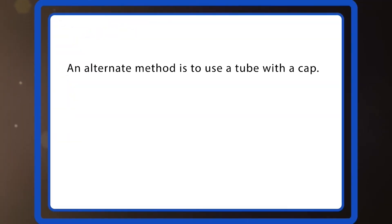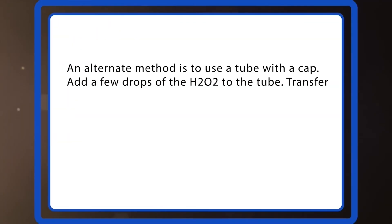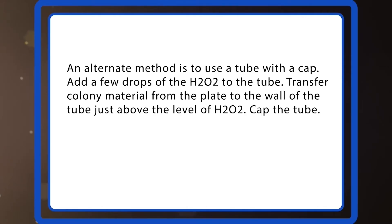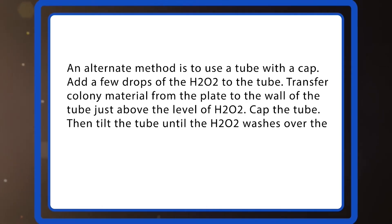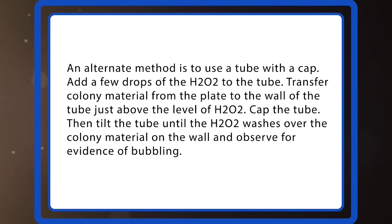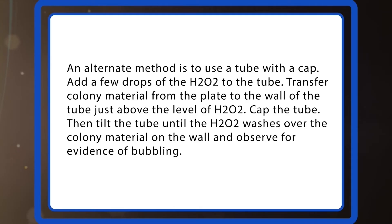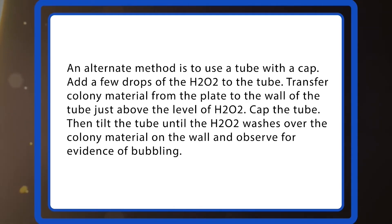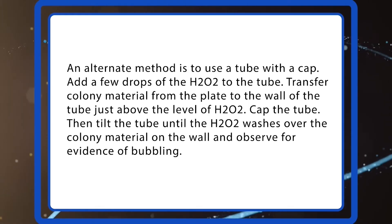An alternate method is to use a tube with a cap. Add a few drops of H2O2 to the tube. Transfer colony material from the plate to the wall of the tube just above the level of the H2O2, then cap the tube. Tilt the tube until the H2O2 washes over the colony material on the wall and observe for evidence of bubbling.